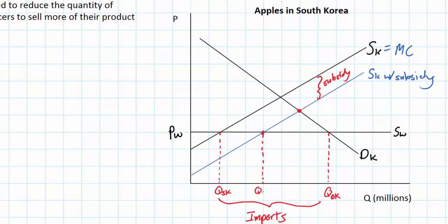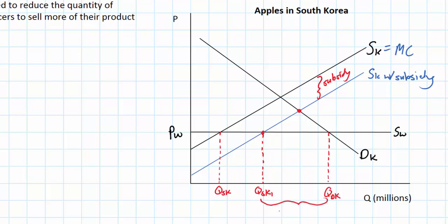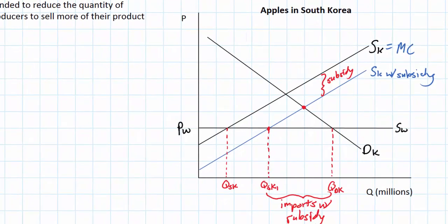I'll call this QSK1 — the new South Korean quantity of apples produced. Since the price of apples has not changed, there has been no change in quantity demanded, so QDK remains the quantity Korean consumers wish to buy. There's been no change in price, no change in quantity demanded, but the quantity supplied by Korean farmers has increased. Therefore, there is now a need for fewer apple imports in South Korea. The quantity of imports with the subsidy is now smaller than it was before.